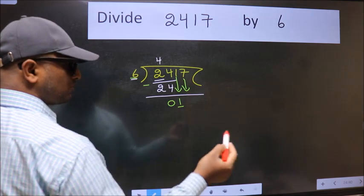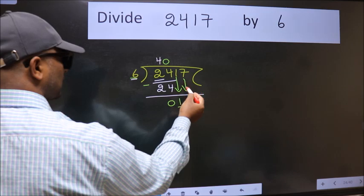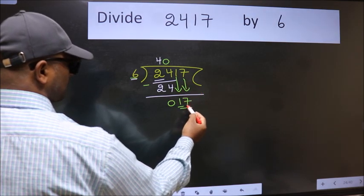And the rule to bring down second number is put 0 here. Then only we can bring this number down. So 17.